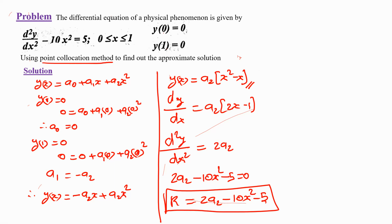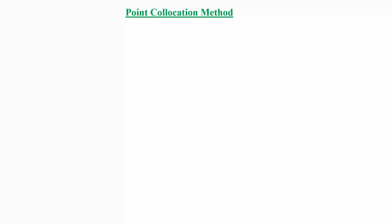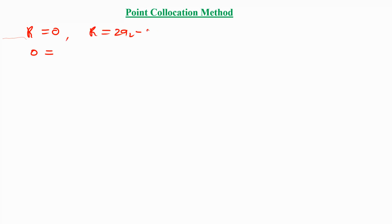Now we apply the point collocation method. The definition of the point collocation method is that the residual R = 0. Therefore, setting the residual equal to zero: 2a₂ − 10x² − 5 = 0.